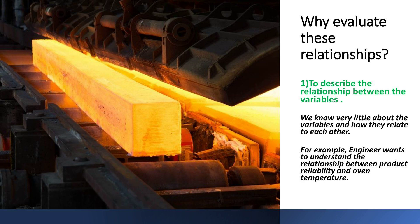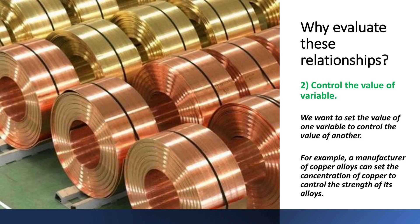To describe the relationship between the variables, we know very little about how they relate to each other. For example, an engineer wants to understand the relationship between product reliability and oven temperature. Understanding variable interactions allows for precise control over outcomes, beneficial in manufacturing processes. We want to set the value of one variable to control the value of another — for example, a manufacturer of copper alloys can set the concentration of copper to control the strength of its alloys.